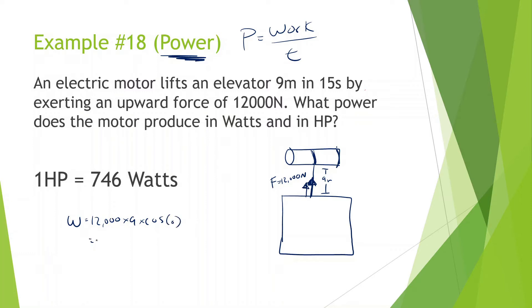So we can now say that the work is equal to 12,000 times 9, which gives us 108,000 joules. That's how much work this motor did onto this elevator.